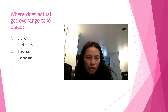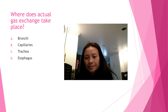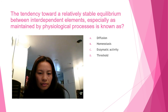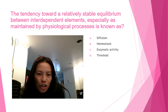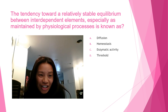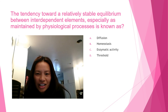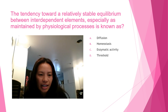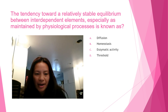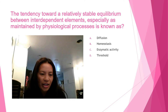Question ten: the tendency toward a relatively stable equilibrium between interdependent elements, especially as maintained by physiological processes, is known as — is it A) diffusion, B) homeostasis, C) enzymatic activity, or D) threshold? The answer is homeostasis — an equilibrium state.